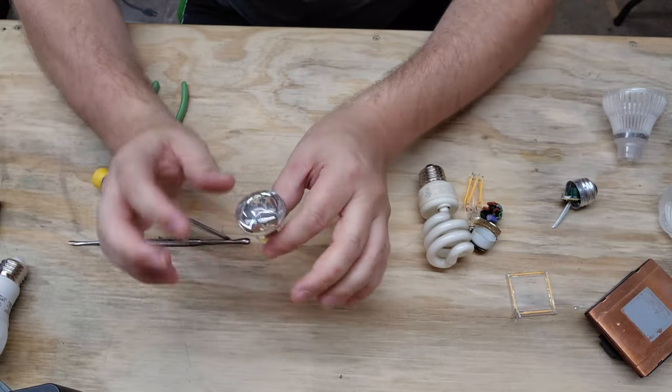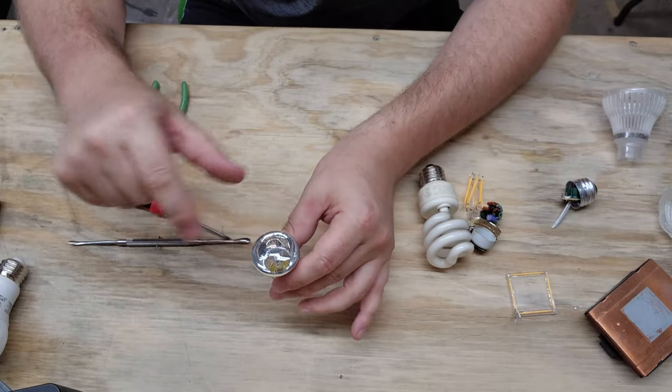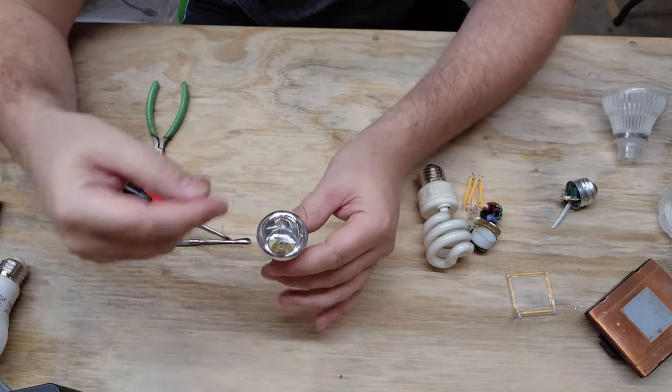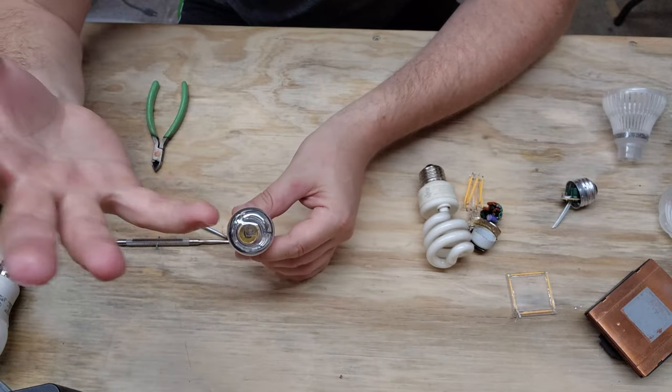Incandescent bulbs, they use a little coil. It operates at mains, full mains potential, and it's basically a resistor and resistors create heat. This heat, a byproduct, is light. So it gives off light.